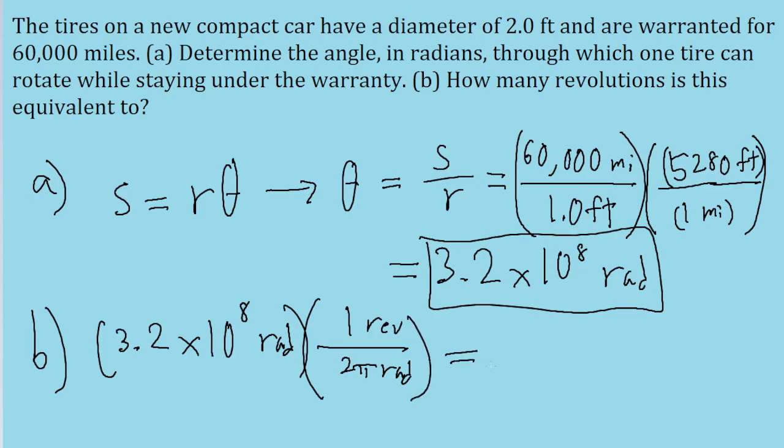And if you put that into your calculator, then you'll find a number of revolutions of about 5.0 multiplied by 10 to the power of 7 revolutions.